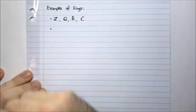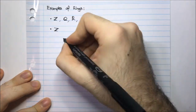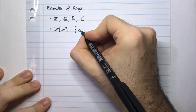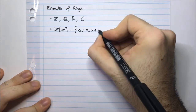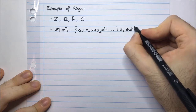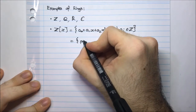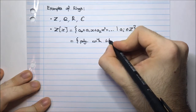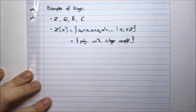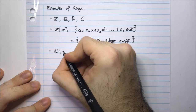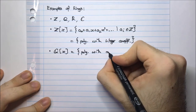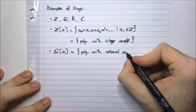Here's something more abstract: Z adjoined with x, written Z[x]. These are polynomials of the form a₀ plus a₁x plus a₂x² and so on, such that all the aᵢ's are in Z — in other words, polynomials with integer coefficients. Similarly, Q[x] would be all polynomials with rational coefficients.